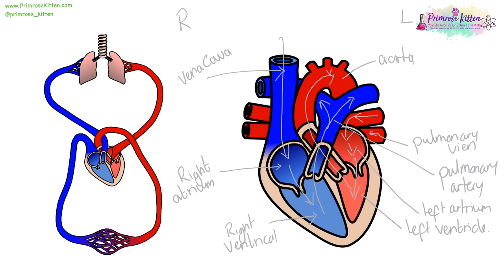If you want to check you have the path of blood right, we need to be looking at capital letters. It goes through the vena cava, the atrium, the ventricle, then the artery. Back through the vein, into the atrium, to the ventricle, and then the aorta. So it goes: vena cava, atrium, ventricle, artery, vein, atrium, ventricle, aorta - V-A-V-A-V-A. If you don't have that pattern, you've made a mistake somewhere.